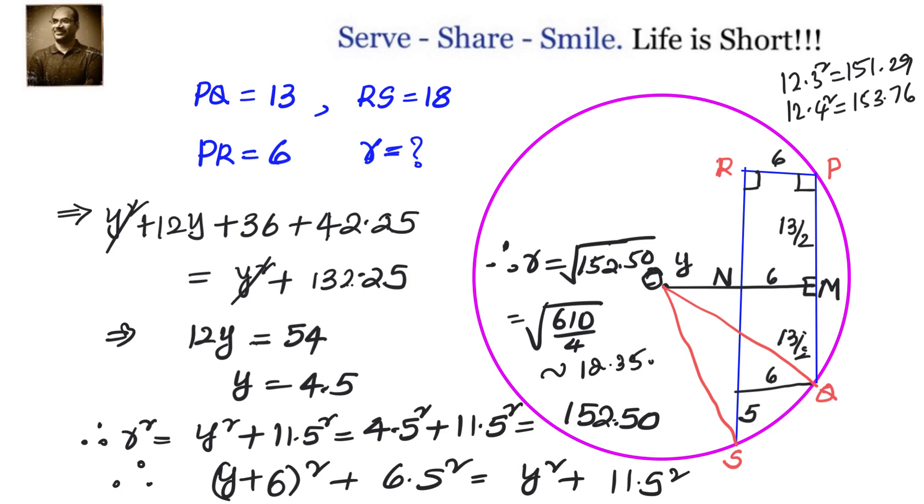We have to find out the radius. So our logic is that PQ is 13, so the perpendicular drawn from the center will divide that into two parts, 6.5 and 6.5. That means if you take that RS is divided by this perpendicular OM at N, then we know NS is 11.5, 18 minus 6.5. So we know NS is 11.5. We also know MQ equals 6.5.